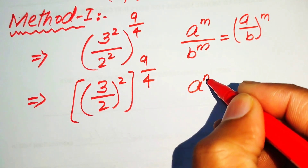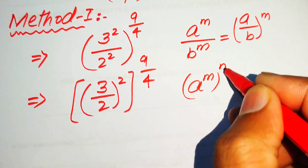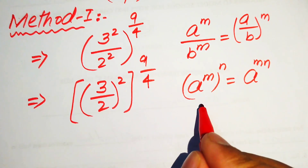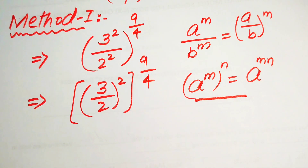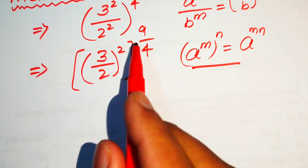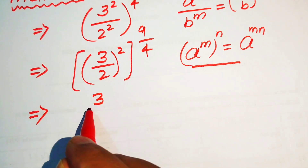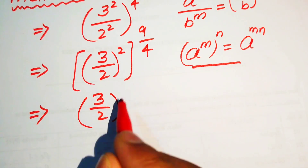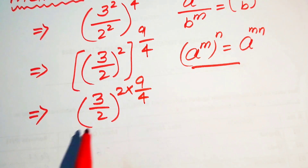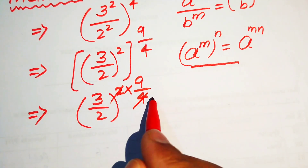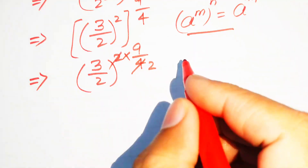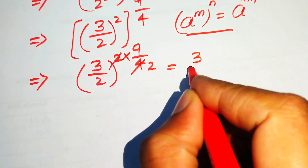We apply another exponential law: (a^m)^n = a^(m×n). So we multiply the two exponents: (3/2) raised to the power 2 × (9/4). This 2 times 2 becomes 4 in the denominator.